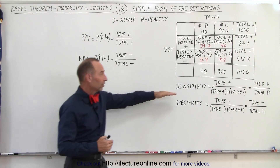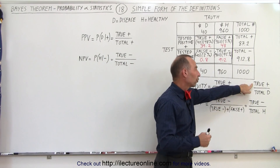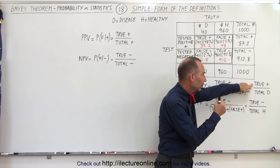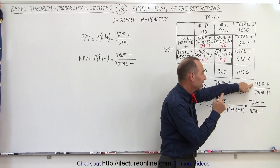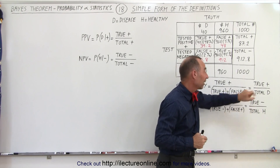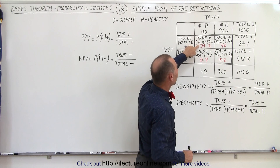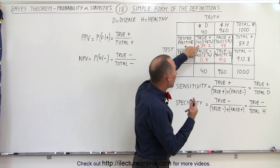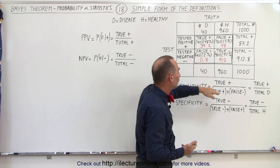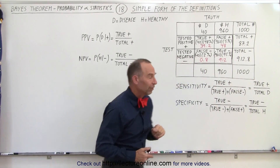In short, sensitivity is defined as the ratio of those that are truly diseased — that have the disease or condition we're testing for — that actually test positive, divided by the total number that have the condition. So in this case, 40 have the disease, 39.2 test positive for the disease, so it's 39.2 out of 40. That's the sensitivity — in our case, 98%.